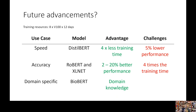There are a few variations of BERT. One direction is quicker training speed: DistilBERT has four times less training time, but with 5% lower performance — a trade-off you have to consider. On the other side, there are variants that are more accurate but take more training time, such as RoBERTa and XLNet, with 2% to 20% better performance but requiring four times the training time.